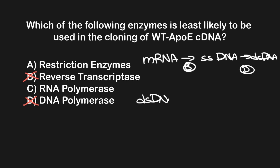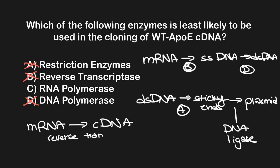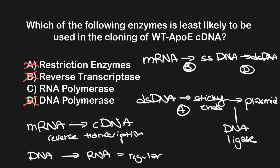After the double-stranded DNA is generated, it is cut by restriction enzymes to create sticky ends and ligated into a plasmid — ligation occurring through DNA ligase. So we can eliminate answer choice A as well, since restriction enzymes are needed to generate the sticky ends. Therefore, answer choice C, RNA polymerase, must be correct, since it isn't used in generating cDNA. RNA polymerase facilitates transcription — the conversion of DNA to RNA — and wouldn't be included in cDNA generation, since instead we have reverse transcription, going from mRNA to DNA.